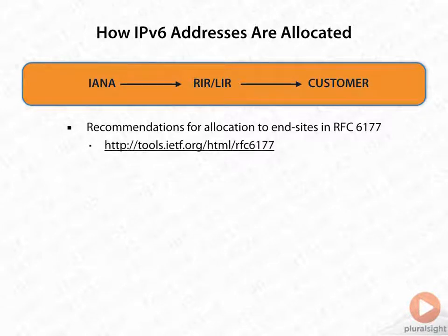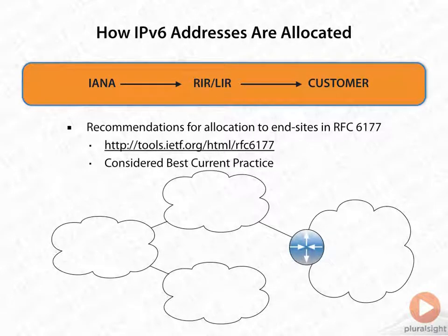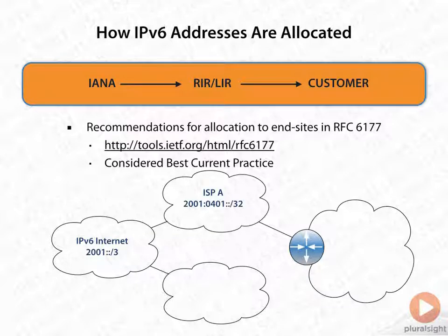If you wanted to go check out RFC 6177, I would recommend spending a little bit of time reading it — that is what's considered the current best practice in the world of IPv6. To give you a visual, imagine we have this network here: a couple of clouds connected together with a router. The IPv6 internet would come from the 2001::/3 address space, and in this case ISPA has been allocated the 2001:0401::/32 address space.